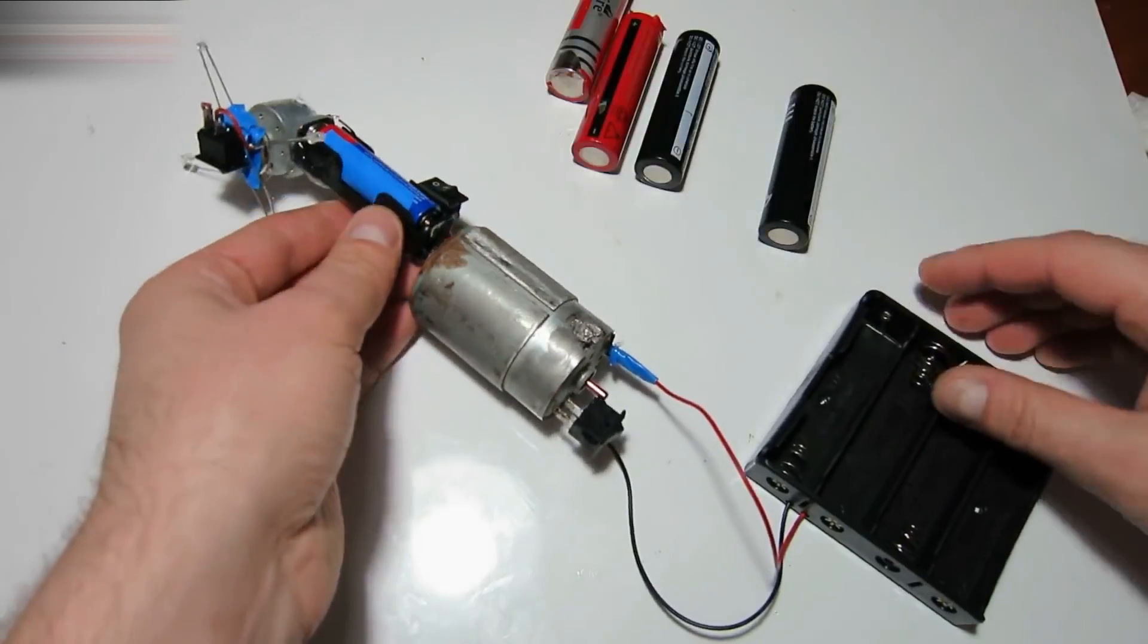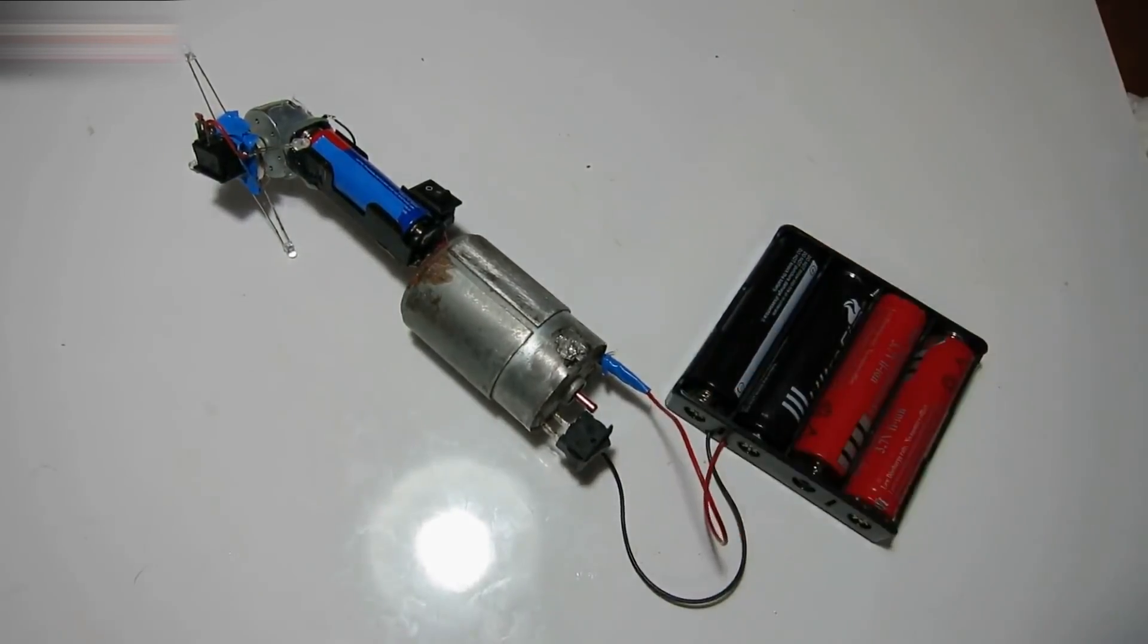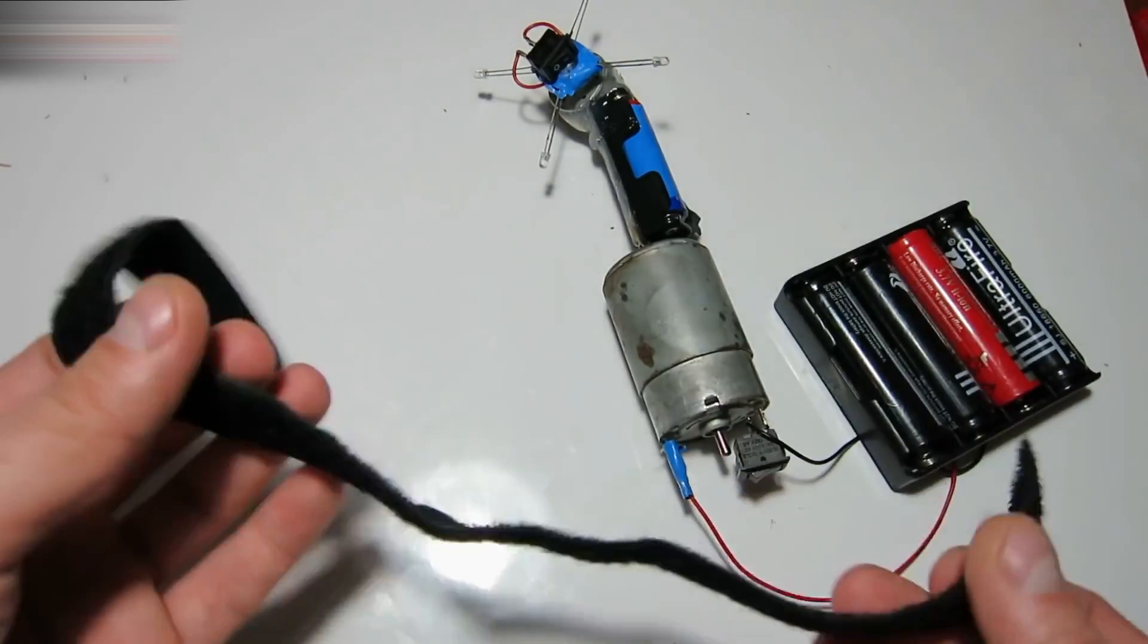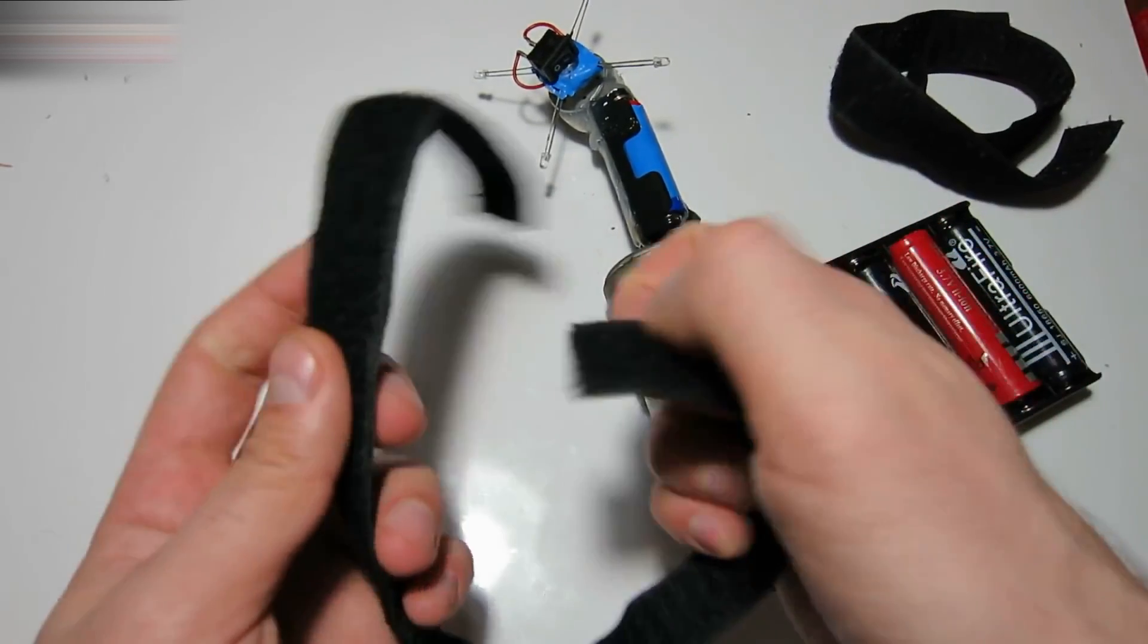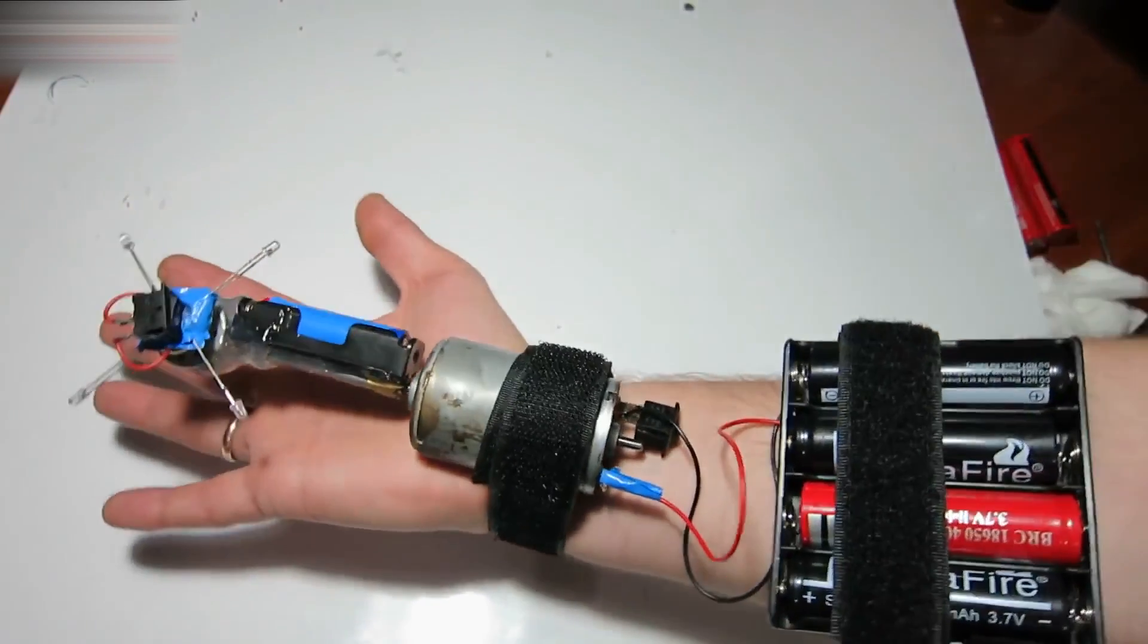Insert the double-A battery and the 18650 batteries into their cases. Put this device on your arm. I'm using these two Velcro fasteners. It should look like this.